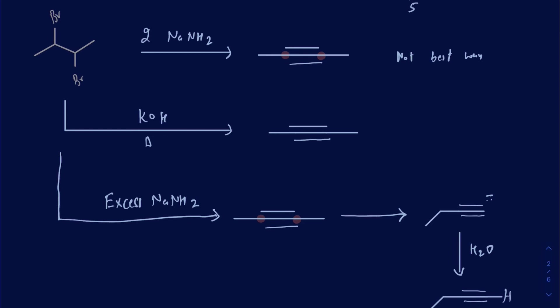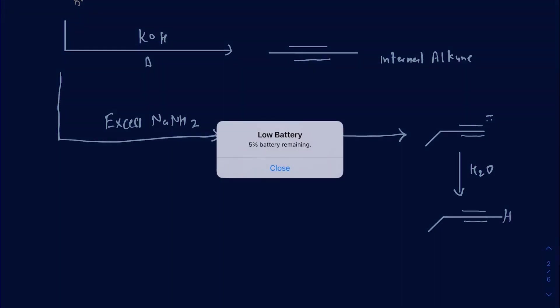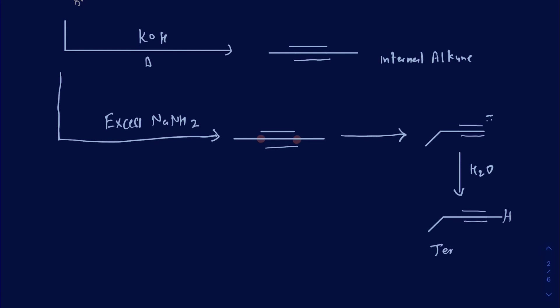The take-home message: if you're trying to make an internal alkyne, use KOH. If you're trying to make a terminal alkyne, use NaNH₂. The terminal alkyne has an acidic proton that can be removed by a base and used as a nucleophile.